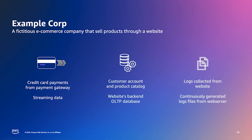First is a payment gateway that produces streaming JSON data by processing credit card payments. Second is an OLTP database on Aurora MySQL, which is the back-end of their website — it holds transactional data such as customer accounts, product catalogs, orders, etc. Third are web logs, which have valuable information to measure the website's performance.